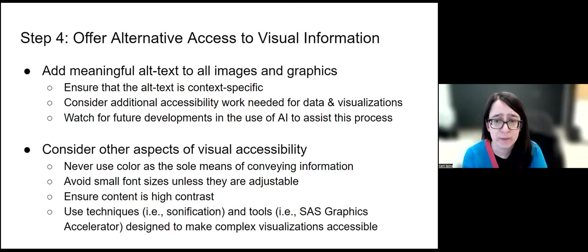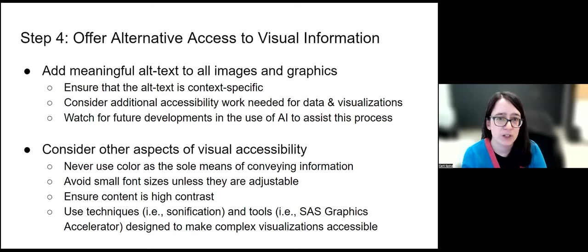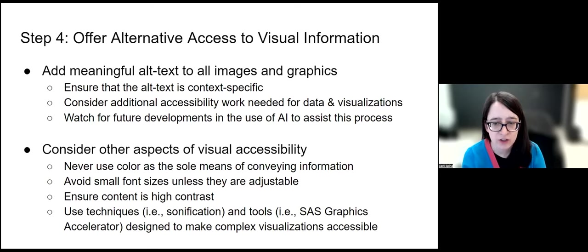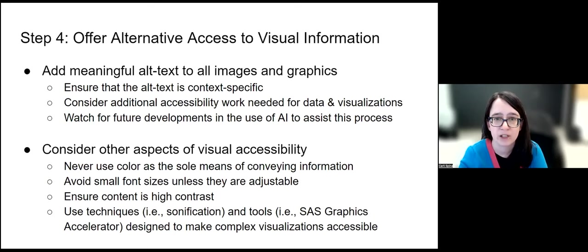This is an area where you can watch for future developments in AI. There are already tools looking at AI for generating alt text, and that will improve as a tool. Also think about other aspects of visual accessibility — not everyone uses a screen reader, but they might have issues with low vision or perceiving colors. Never use color as the sole means of conveying information, avoid small font sizes unless adjustable, ensure content is high contrast so background and foreground are distinguishable. For data visualizations, consider techniques like sonification tools that turn data visualization into sound files, or tools like SAS Graphics Accelerator designed with accessibility at the forefront.